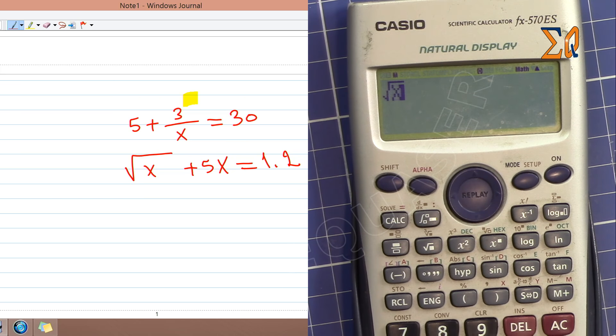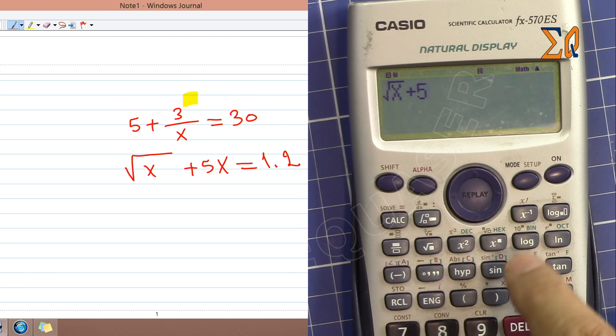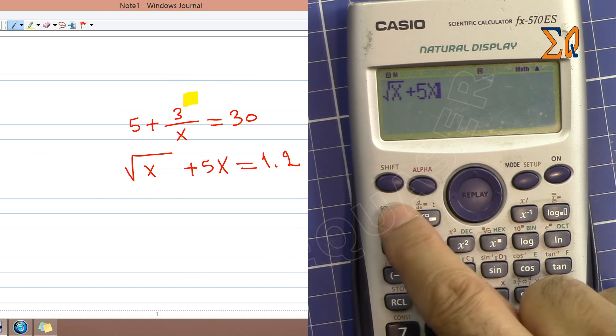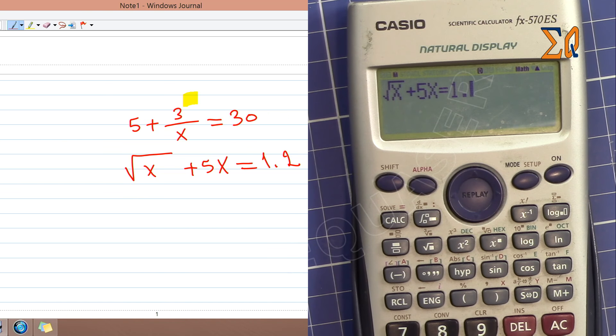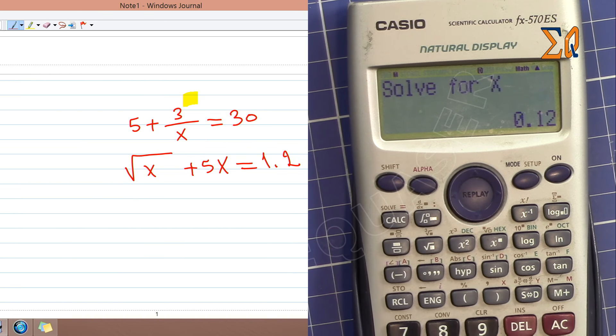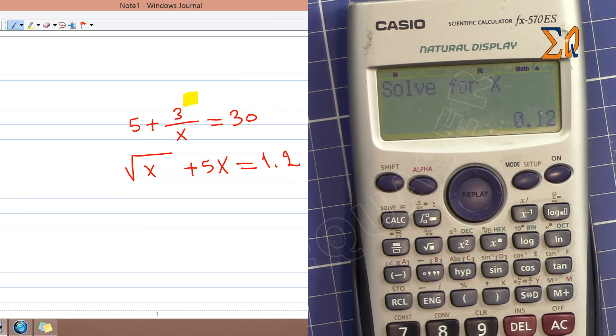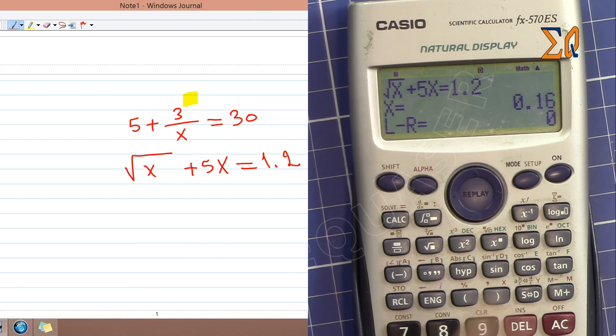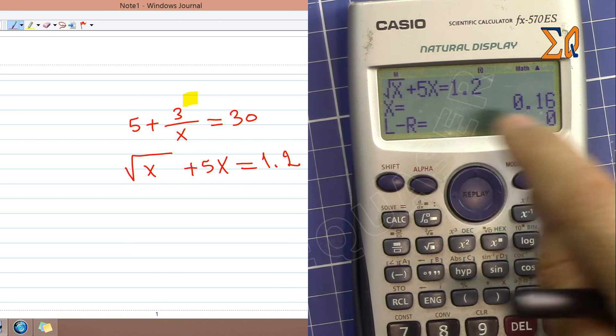Square root of alpha x, with the arrow go to the right, plus 5 alpha x, and then alpha equal 1.2. And then SHIFT solve, and then this is the previous value, equal, and 0.16. That's the absolute value and it's found.